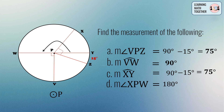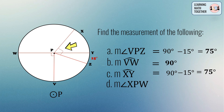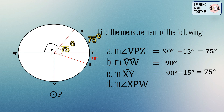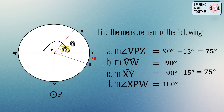For the measurement of angle XPW, look at the straight angle YPW which equals 180 degrees. Since arc XY is the intercepted arc of central angle XPY, and arc XY is 75 degrees, it follows that angle XPY is also 75 degrees. Subtracting from 180 degrees: 180 minus 75 degrees gives us 105 degrees. Therefore, the measurement of angle XPW is equal to 105 degrees.